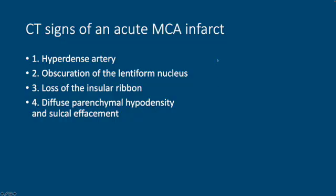So now that we have that background knowledge, let's talk about CT findings in acute MCA territory infarct. There are a couple of things we can see. We can see the hyperdense MCA sign, which is one of the very earliest signs of acute stroke that we can see on CT. There's obscuration of the lentiform nucleus — remember the lentiform nucleus is the caudate and putamen, the basal ganglia. And then there's loss of the insular ribbon, which is the ribbon of cortex along the insula.